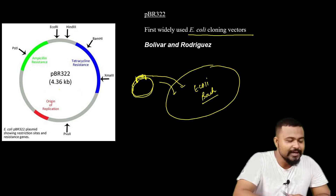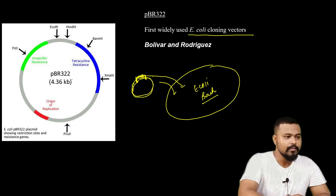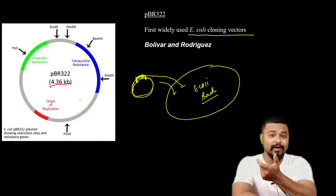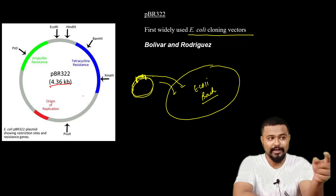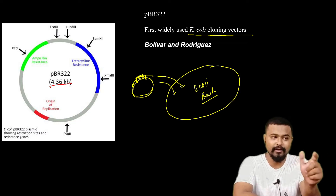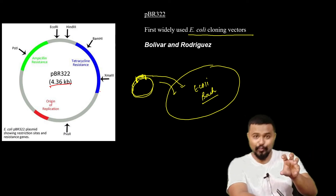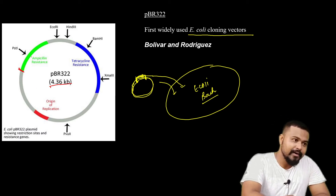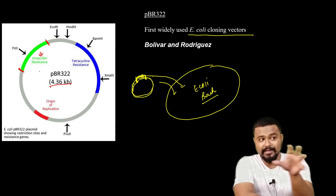The total size of this plasmid is 4.36 kb. Now let me tell you about the structure and details of this plasmid and its important features.